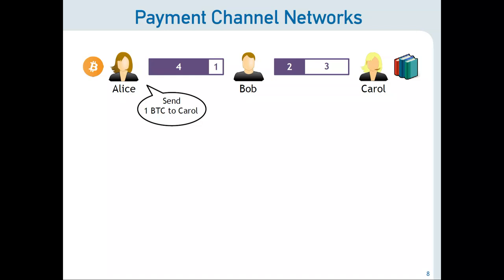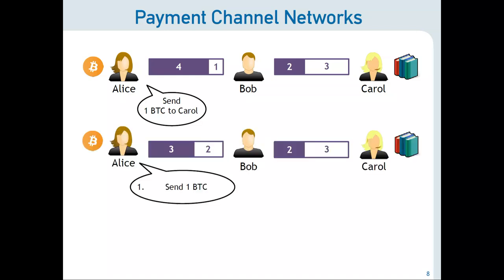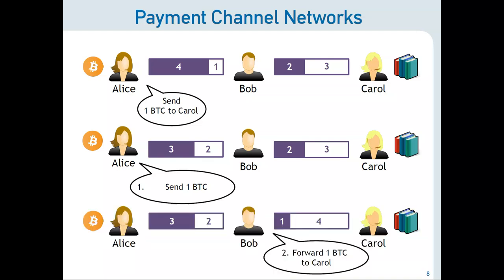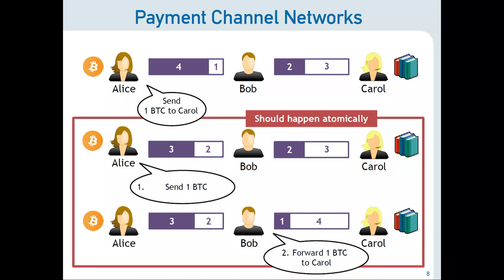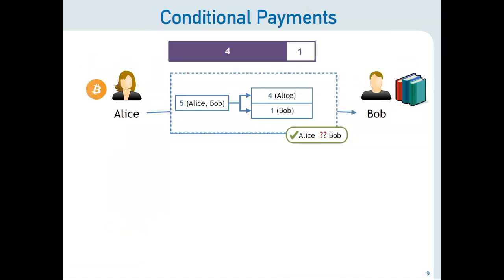Imagine Alice wants to pay Carol, but she does not have a payment channel directly to her, so the payment goes indirectly through Bob. What happens in practice is Alice sends the Bitcoin to Bob, who in turn forwards it to Carol. If done naively, this has a huge security problem — Bob could just run away with the coins as soon as he gets them from Alice. So we need some magic cryptographic operation that allows us to have this operation atomically. That means Bob will be able to get the coins from Alice if, and only if, Bob forwards them to Carol.